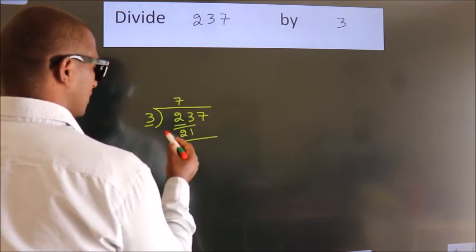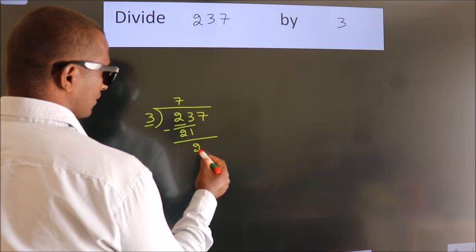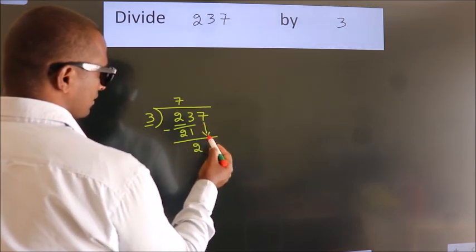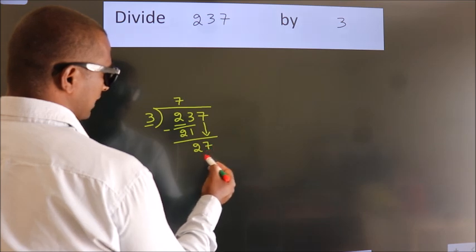Now we should subtract. We get 2. After this, bring down the next number. So 7 down. So 27.